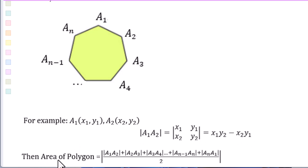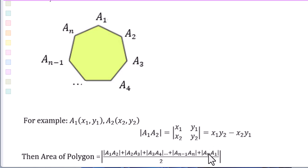Then the area of this polygon equals the determinant of A1, A2, plus the determinant of A2, A3. Keep going, add the determinant of A sub n, A1, all over 2. We will use this formula to estimate the area of the leaf.